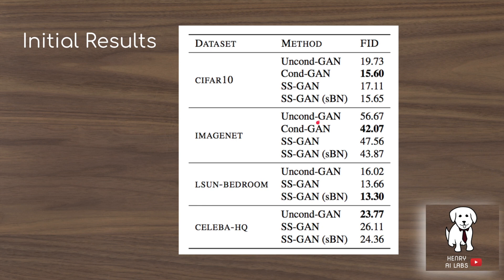These are the initial results of the self-supervised GAN and its modification to batch normalization, compared to conditional GANs and unconditional GANs. The self-supervised GAN is already outperforming the unconditional GAN, which is a GAN without the rotation task, while the conditional GAN uses class labels.